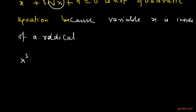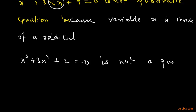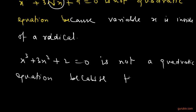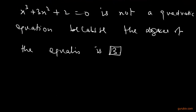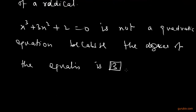Another example: x³ + 3x² + 2 = 0 is also not a quadratic equation because the degree of the equation is 3, since 3 is the maximum power of the variable x. So this is the introduction to a quadratic equation. Thank you.